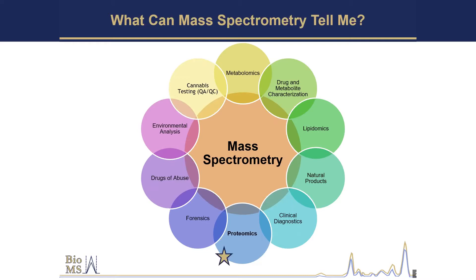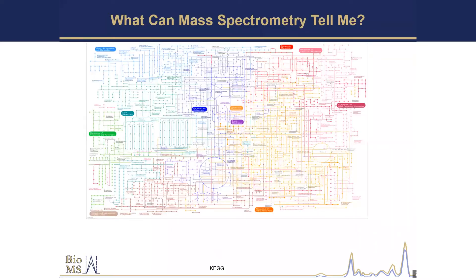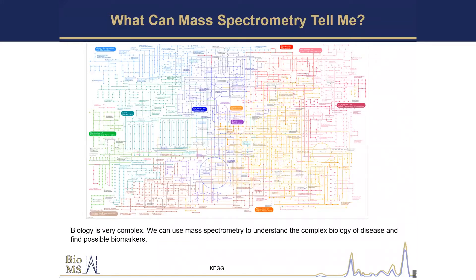But primarily today I'm going to talk to you about proteomics, because that's what I do. Biology is so complex — this is just a snapshot of metabolism — and we can use mass spectrometry to understand the complex biology of disease and find possible biomarkers. For those who've had biochemistry, some of this might look familiar, like the TCA cycle and lipid metabolism. Biology is complex and we can use a tool like mass spec to start to understand some of these diseases.